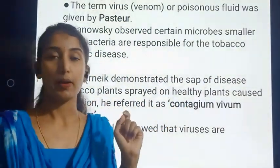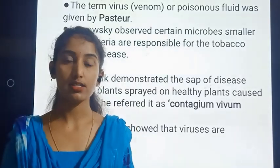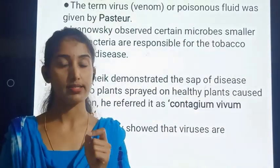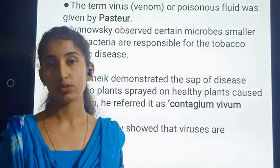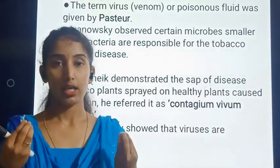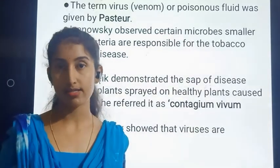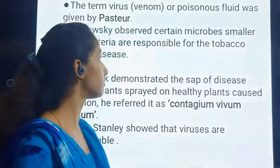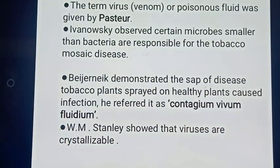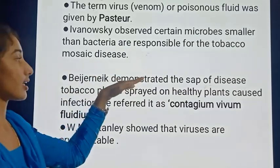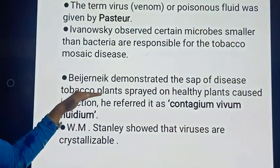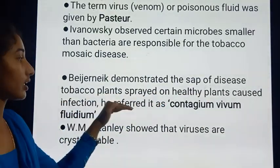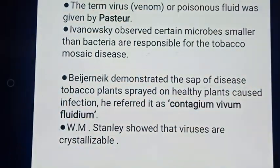Viruses are responsible for tobacco mosaic disease, seen in tobacco plants. These viruses are called Tobacco Mosaic Virus (TMV). They infect the plant and mosaic-like patches are caused on the leaves of tobacco plants. He demonstrated that the sap of diseased tobacco plants spread on healthy plants caused infection, and he referred to it as contagious vivum fluid.